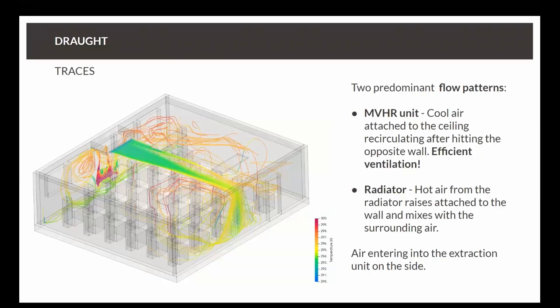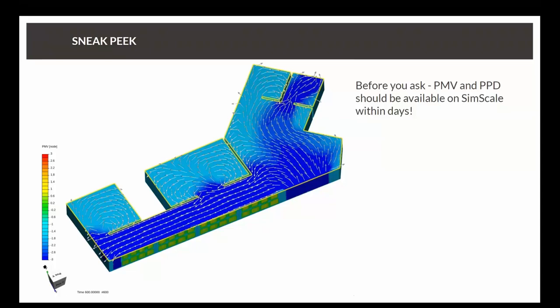Finally, some traces, as I showed in the post processor in the platform, where we can see these main flow patterns with the Coanda effect, with the flow going up from the radiator, hitting everything, the flow getting back to the unit. But you don't see any more droughts around the room. That's what we want to avoid. So, just to finish, and before everybody asks, we have some good news. We will be able to have PMV and PPD available in our platform within the next few days. So, that would be great to be able to see all these pictures that we have to take from an external post processor. That would be really useful for this kind of HVAC simulations.